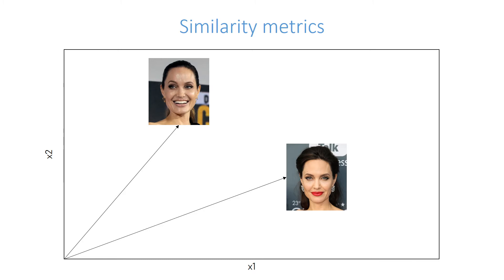Face recognition models are regular convolutional neural networks and they are responsible for representing face images as vectors. We then need to compare the represented vectors. Herein, we can find the angle between vectors, which is cosine similarity, or the distance between vectors, which is Euclidean distance. Additionally, we could apply L2 normalization to the vectors before finding the distance.